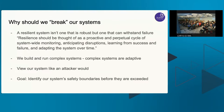Why we should break our system: it's ultimately to identify our system's safety boundaries before they are exceeded. Security chaos engineering also focuses on viewing the system like an attacker would. With security scanning, we scan specific resources in compartments, each managed by different people — but an attacker views the system as a whole and exploits loopholes in one area to access another. We also acknowledge we run very complex systems; with thousands of different components, no single person can picture all the moving parts. A resilient system isn't one that is robust, but one that can withstand failure through proactive and perpetual monitoring, anticipating disruptions, learning from success and failure, and adapting over time.